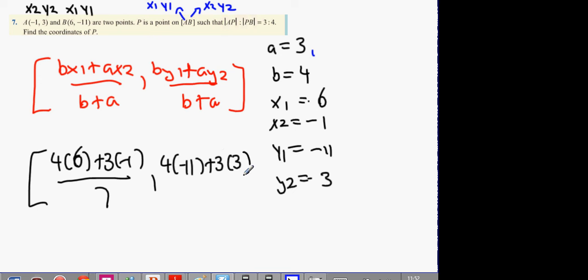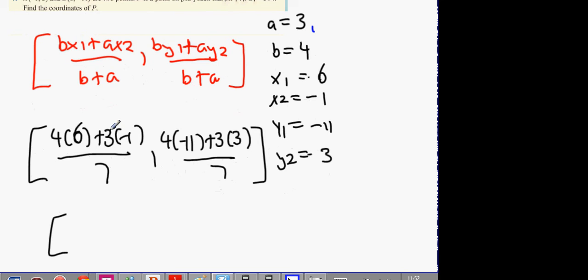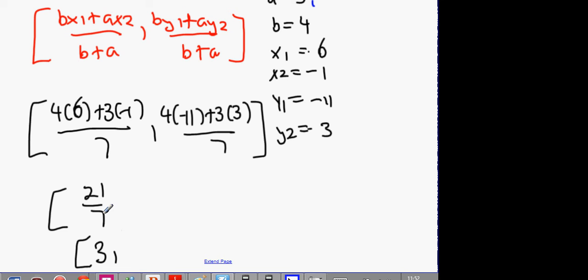Let's see what happens this time: 24 minus 3 gives 21 over 7, which gives me 3. Right away we know the answer is not the same. Then minus 44 plus 9 gives minus 35, and minus 35 over 7 is minus 5. We can now see that this question wasn't answered correctly because we got mixed up with x1, y1 and x2, y2.